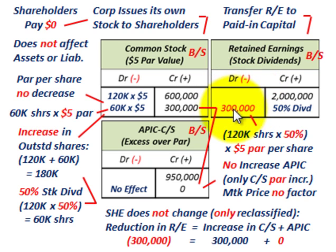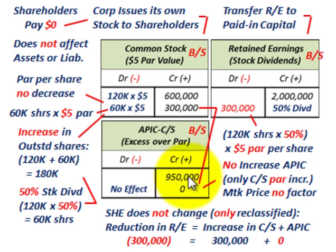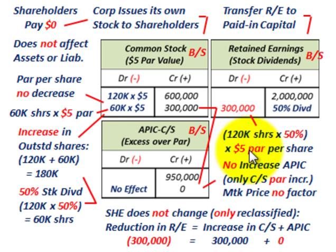We're going to reduce retained earnings by $300,000 — that's the debit — and credit common stock by that same $300,000. With the large stock dividend, nothing flows into additional paid-in capital; it's a zero amount. The $300,000 is calculated as: 120,000 shares × 50% dividend × $5 par value per share. The key here is we're using the par value per share when making this distribution from retained earnings to the equity common stock account, which equates to $300,000.